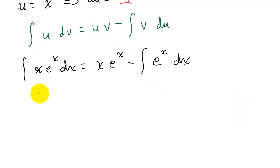And so this is going to give us x e to the x minus, and then we integrate this, and when we integrate e to the x we just get e to the x, and then plus our constant term c. And that would be our answer.